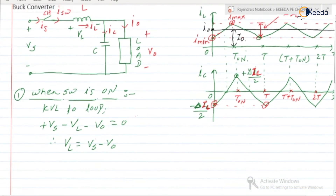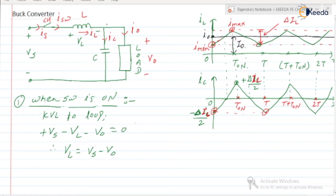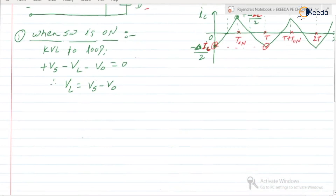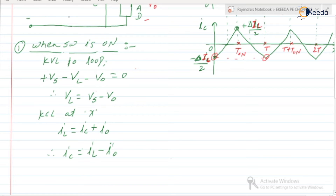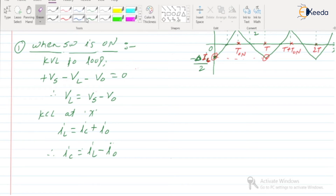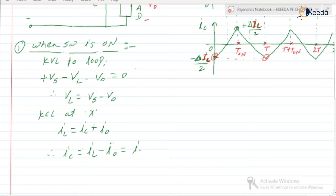Next, what is IC when the switch is in the ON state? Applying KCL at node X: IL = IC + I0. Therefore, IC = IL − I0. Since I0 is a constant, we can write IC = IL − I0 (where I0 is capital I0).